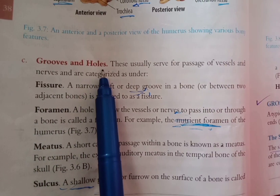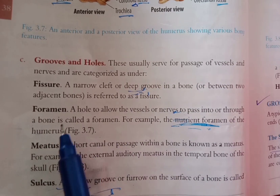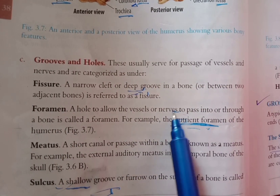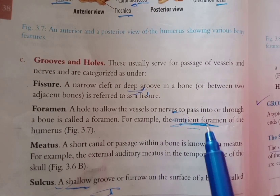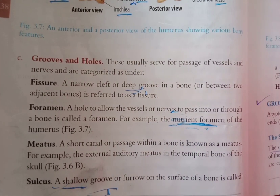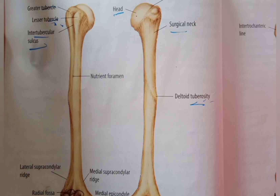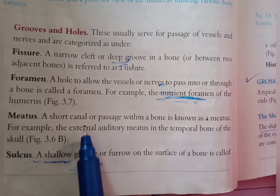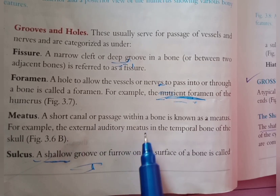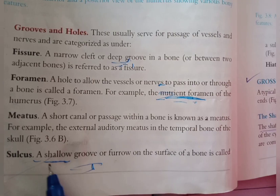Next, grooves. There are fissures, which are deep grooves in bone. A foramen is an opening through which nerves and vessels pass. A common example is the nutrient foramen. A meatus is a short channel — for example, the external auditory meatus.